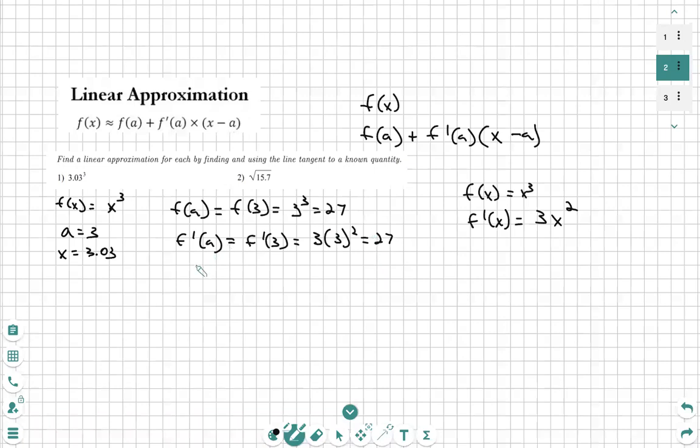So now we're going to plug it into our function. f of 3.03 is approximately f of a, which is 27, plus f prime of a. We're looking up here, by the way. f prime of a, or this equation here. f prime of a, which is 27 times 3.03 minus 3.